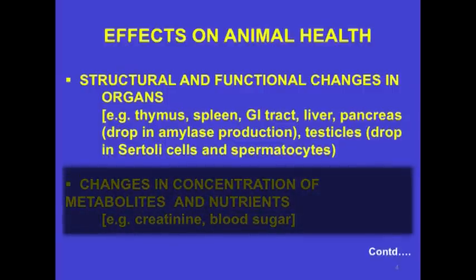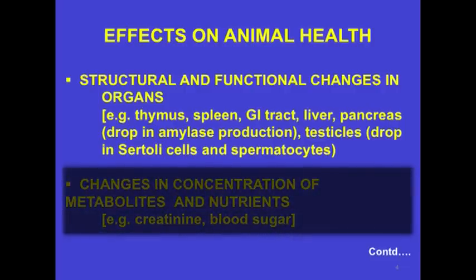Effects on animal health: every statement I'm making here is supported by references—papers published in highly reputed journals with high impact factor like Nature or Science, by scientists with no conflict of interest working in outstanding institutions like King's College London or the Salk Institute. We have documented structural and functional changes in organs: thymus—concerned with immune response—spleen, gastrointestinal tract, liver, and pancreas. In the pancreas, for example, there's a drop in amylase production, which is an enzyme that digests carbohydrates. In the testicles, there's a drop in Sertoli cells, from which sperm are derived, and in spermatocytes.